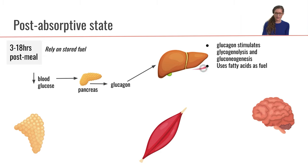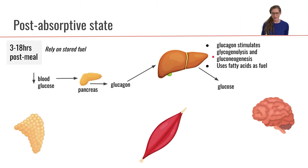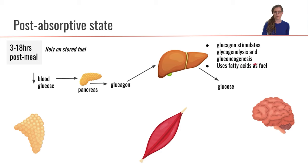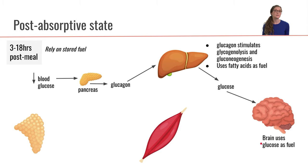During this phase, the liver is going to primarily be using fatty acids as fuel. So the liver will send glucose out into the bloodstream — that glucose came from glycogenolysis and from gluconeogenesis. The brain is going to use that glucose as fuel.